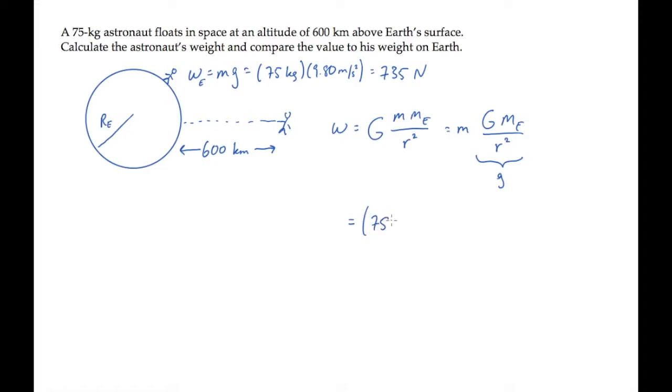Substitute all the known values, where r is the distance from the center of the Earth to the astronaut, so that's the radius of Earth plus the altitude above the Earth, converted into meters.